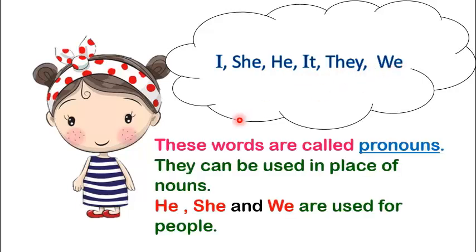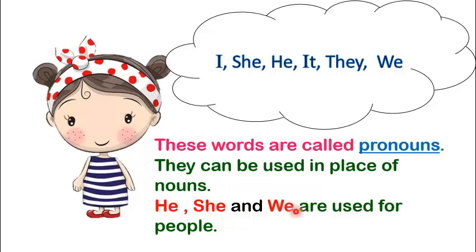These words are called pronouns. They can be used in place of nouns. He, she and we are used for people.